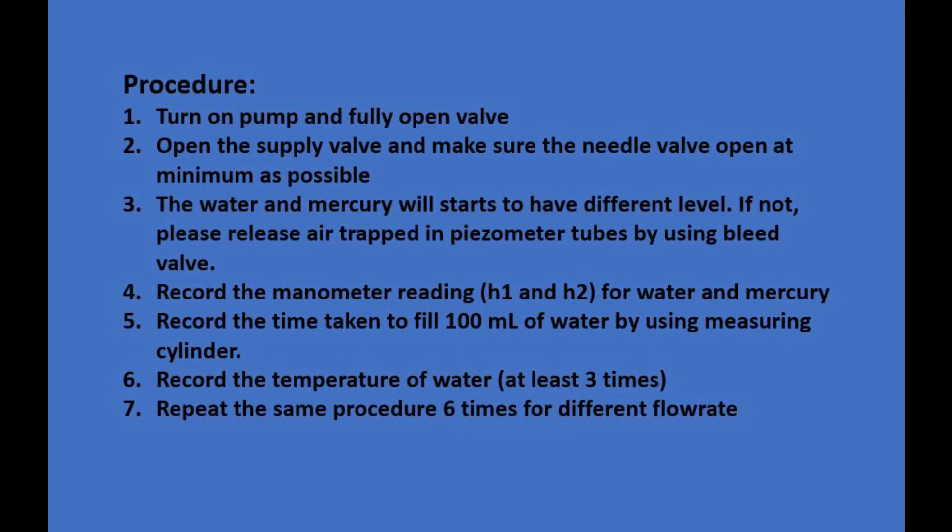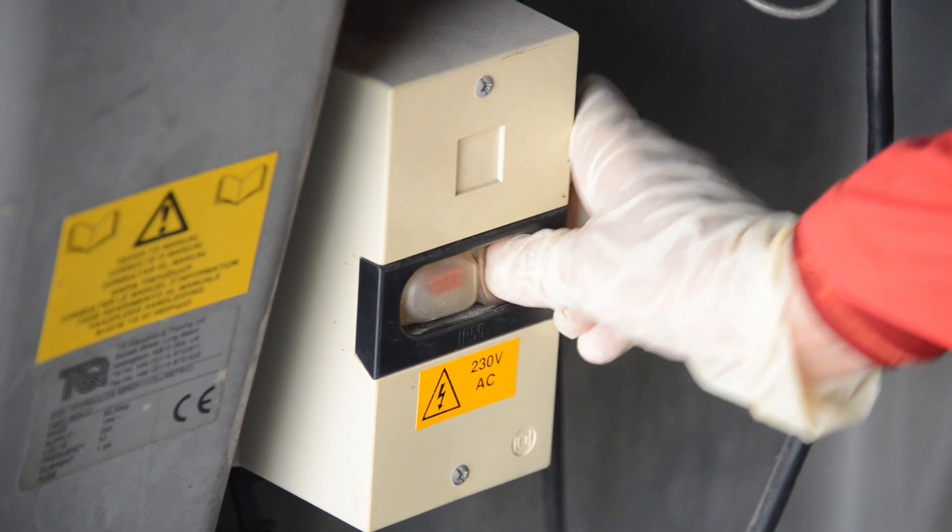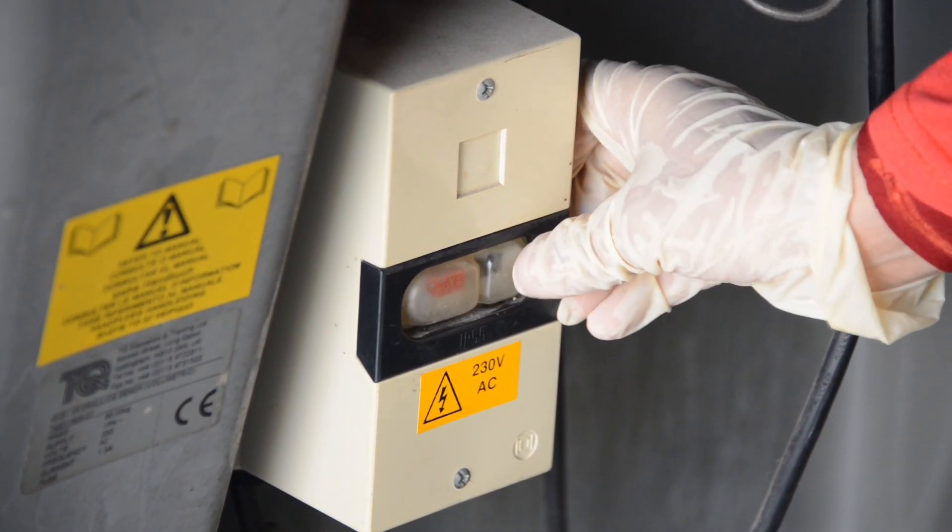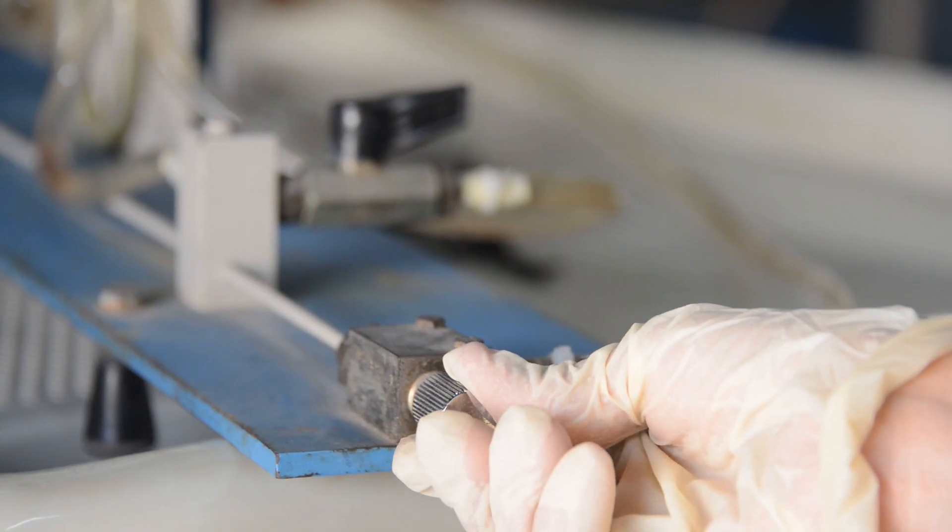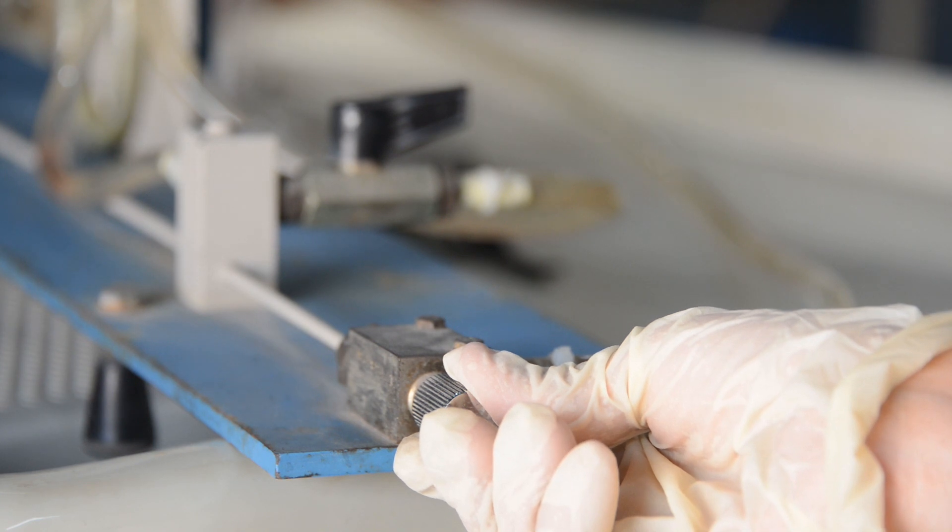To start the experiments, firstly, turn on the pump and fully open valve. After that, open the supply valve and make sure the needle valve is open at minimum as possible. This will be your minimum flow rate.